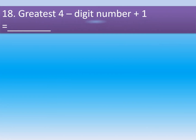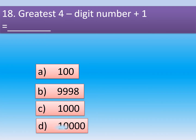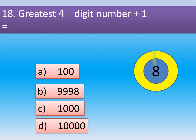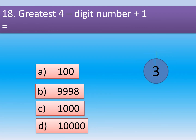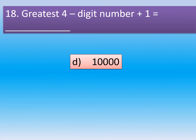Question number 18. Greatest 4-digit number plus 1 equals dash. Option A: 100. Option B: 9998. Option C: 1000. Option D: 10,000. The correct option is Option D: 10,000.